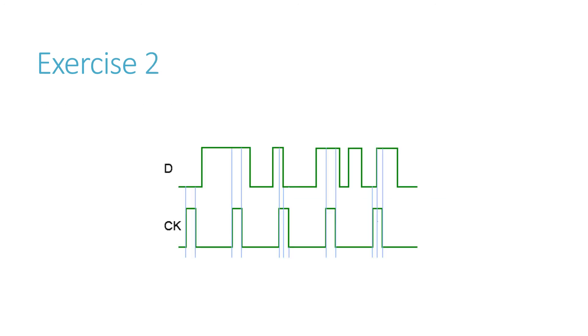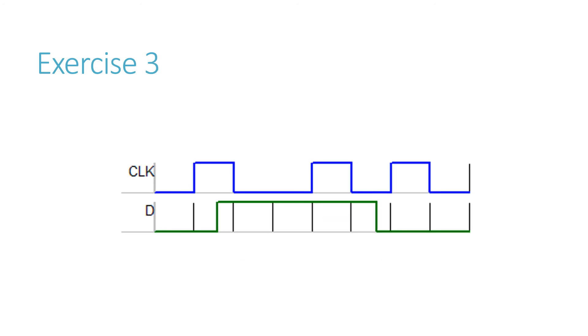So, this is exercise one, exercise two, D, and the clock. The clock's called CKE. And here's the third of the three exercises.